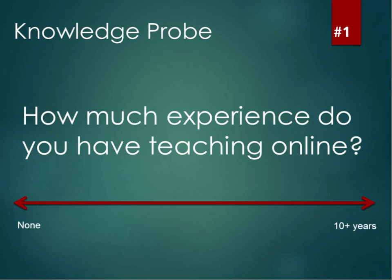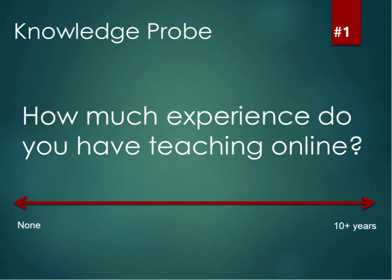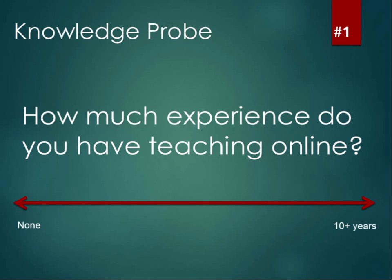This is our very first activity. What I'd like you to do is grab the second tool — pick any of the pointers that are available. Notice that the ones with the little triangles in the corner do have multiple choices. Please mark yourself on this continuum. This is the first way to use the whiteboard: as a knowledge probe, just to get an idea about your audience. It could help the presenter know their audience. When you've attended webinars, they typically ask a general question or two at the beginning for this same purpose.